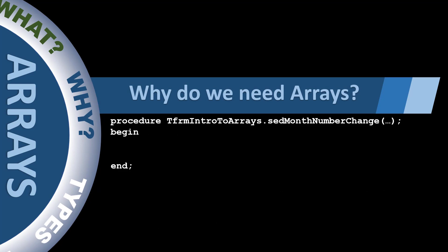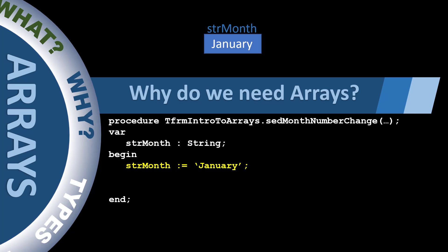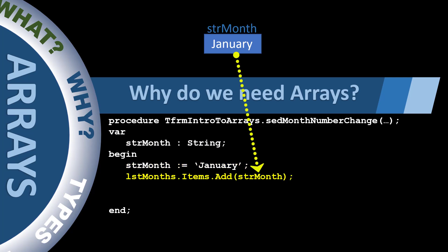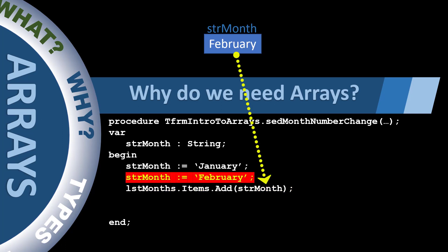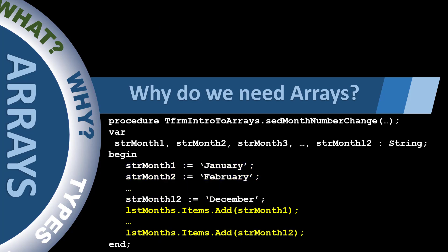So why do we need arrays? Consider the following scenario. You declare a string variable named str-month, assign January to it, then display it in a listbox. But a string variable can only store one month's name. If you try to assign February after January, you overwrite the first value. To store all the month names in memory, you could declare 12 separate string variables, assign a month name to each, and add each to the listbox — but there are a few problems with this approach.